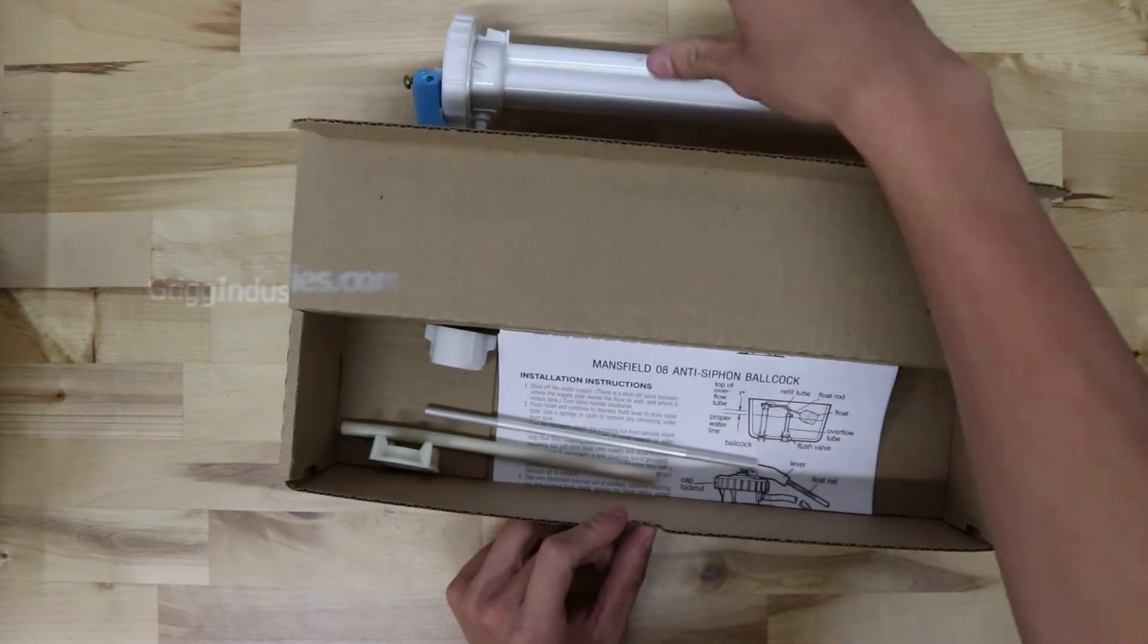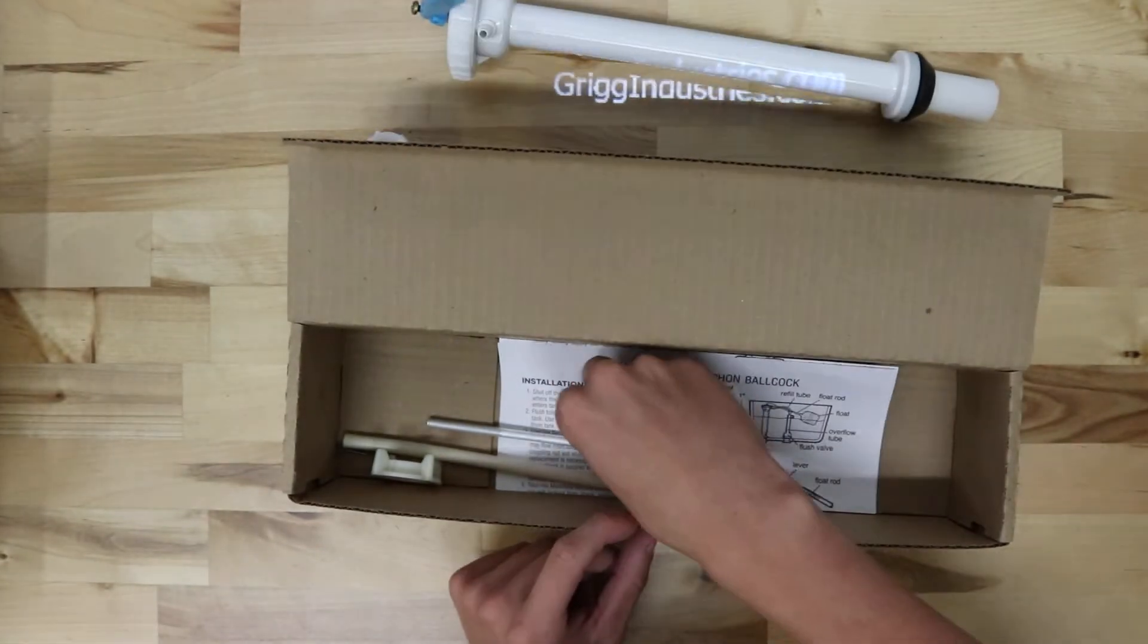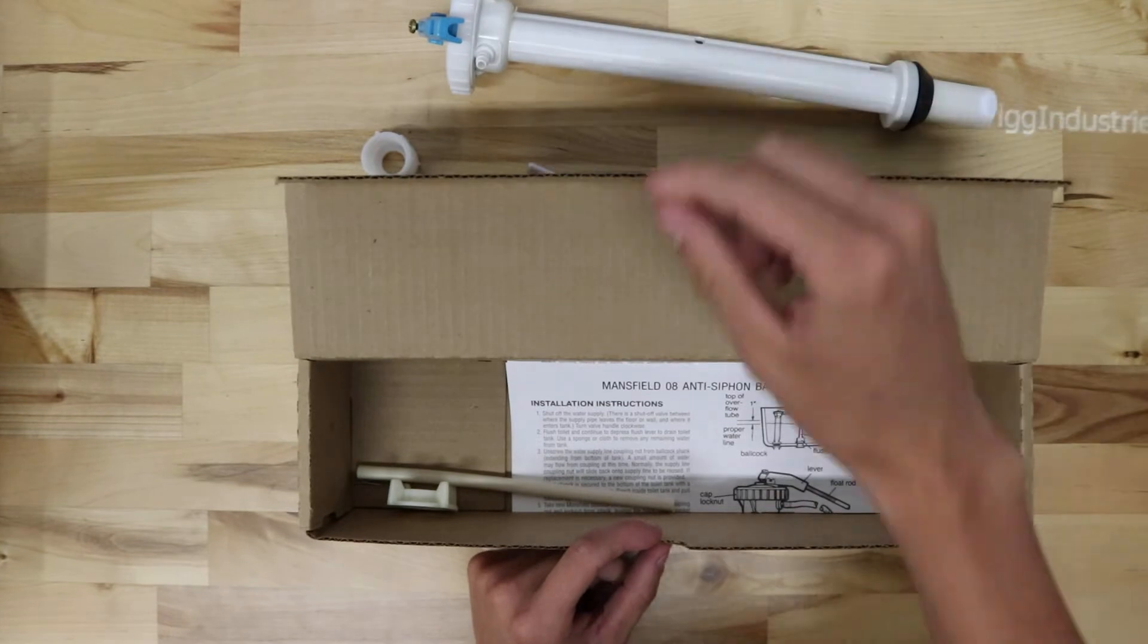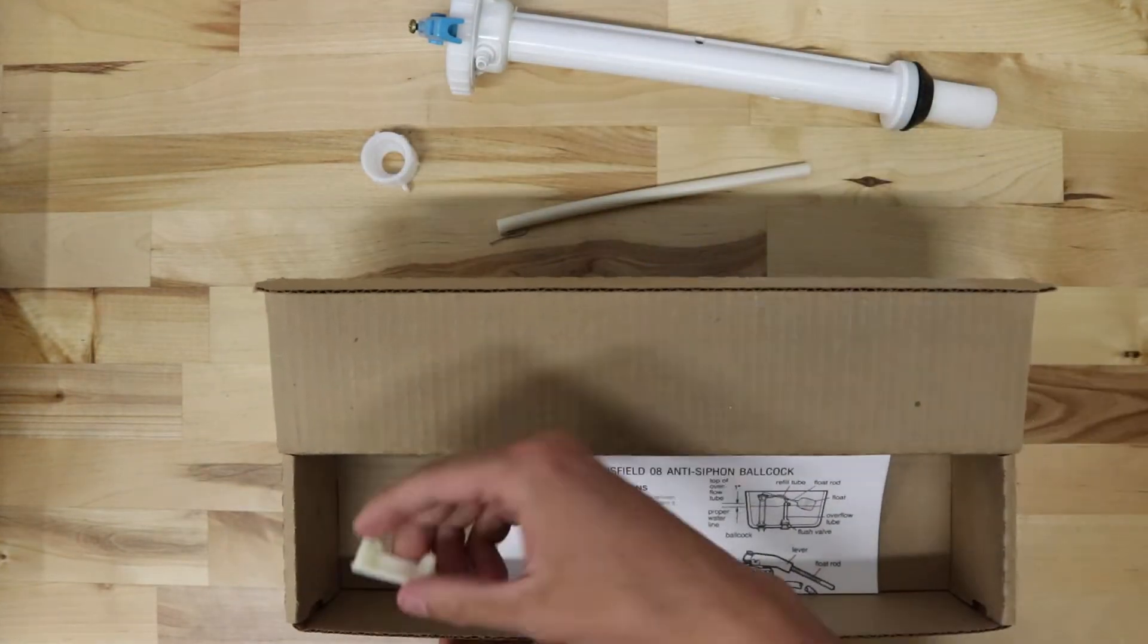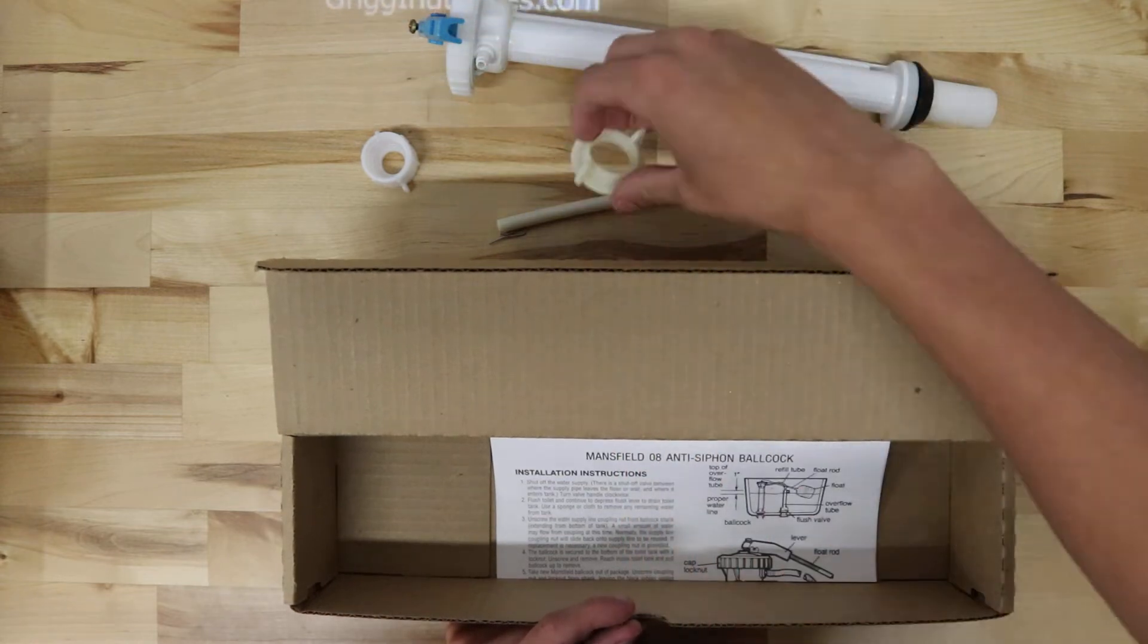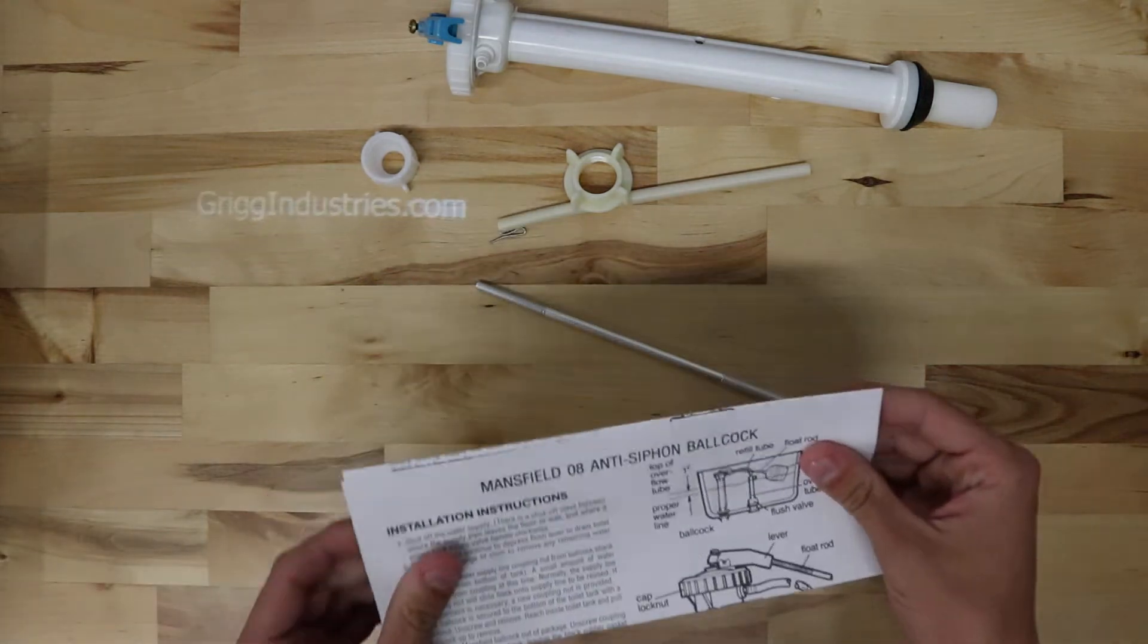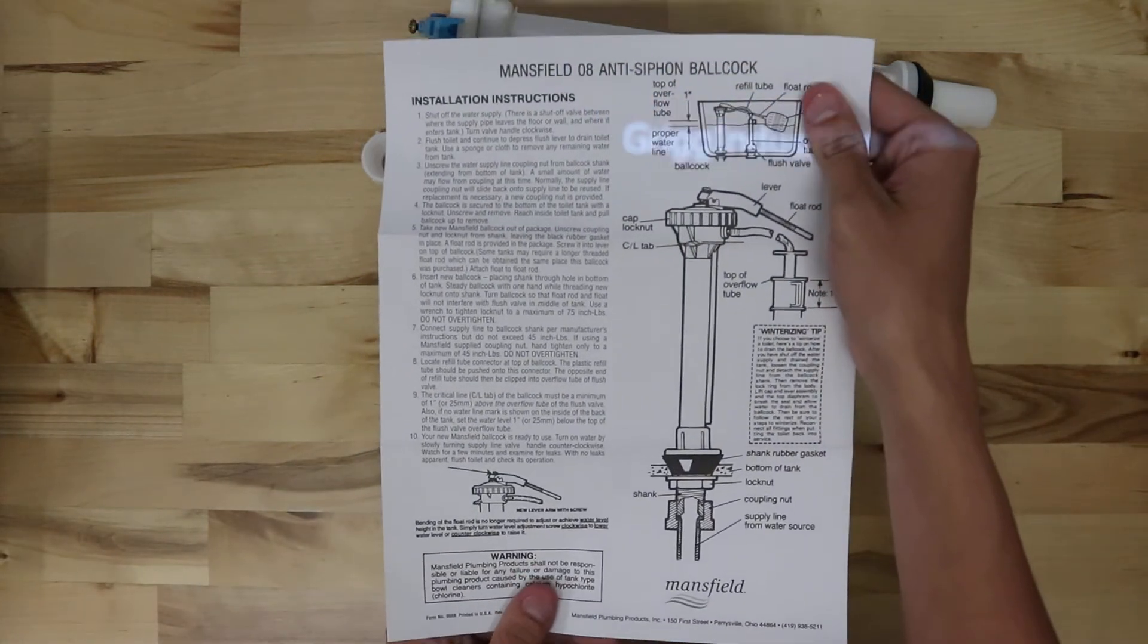It comes with the valve itself, a nut for the supply line, the ball rod, the replenish tube, the nut to secure the valve to the tank, and a list of instructions on how to install the fill valve.